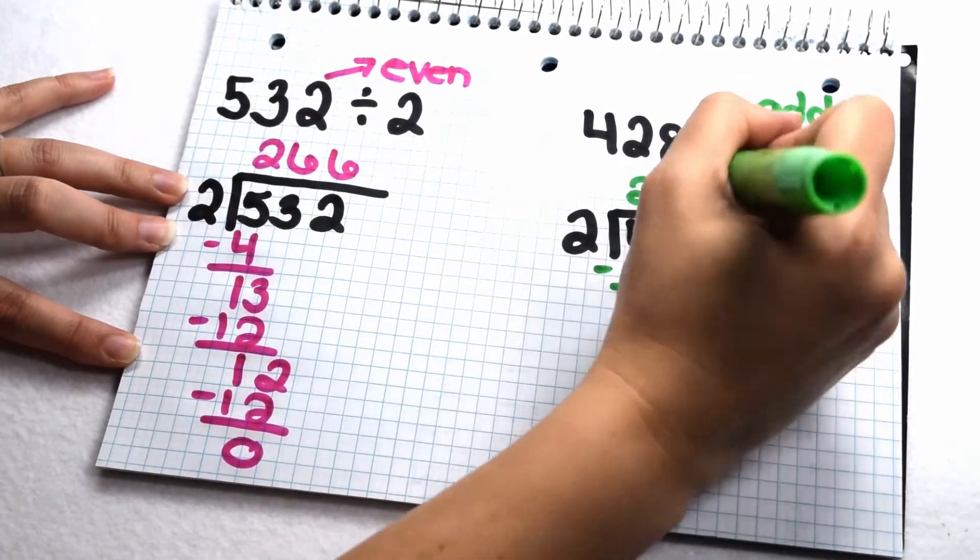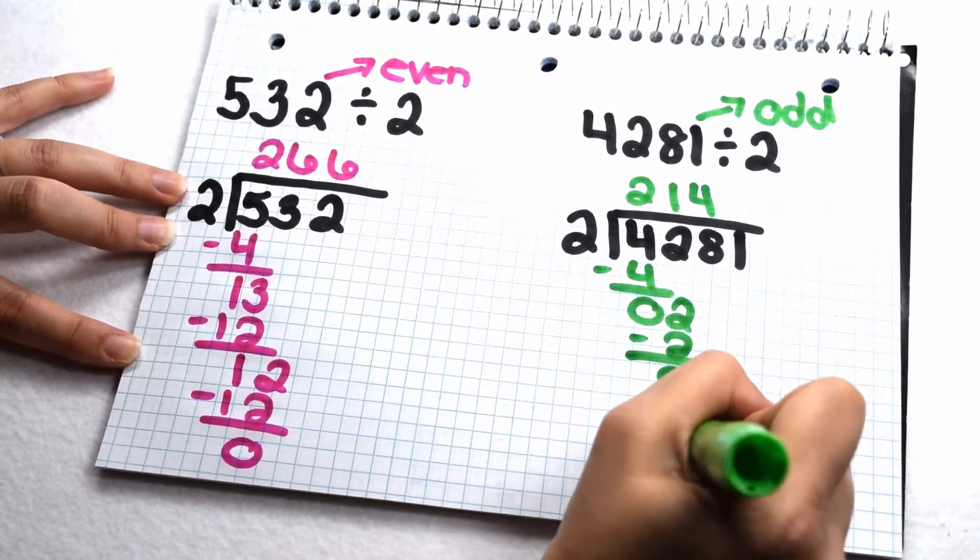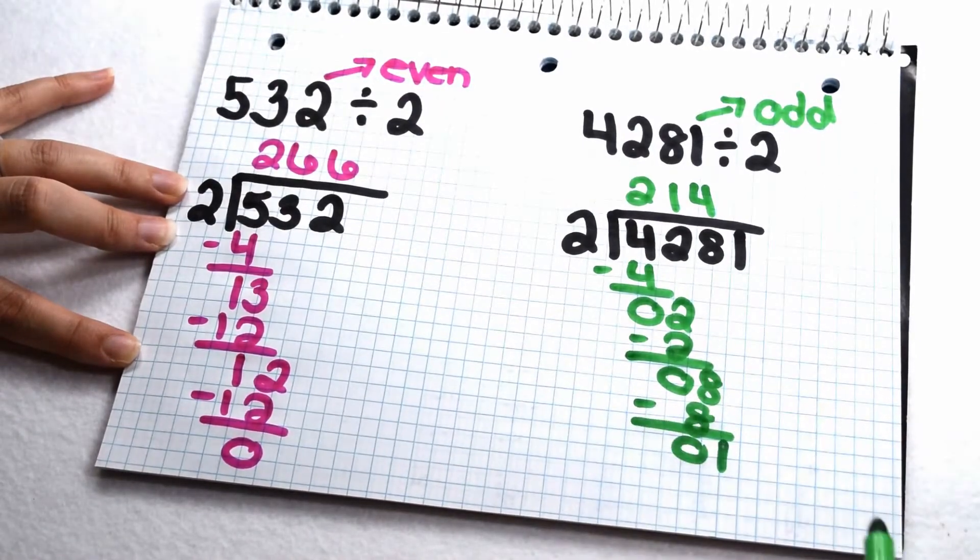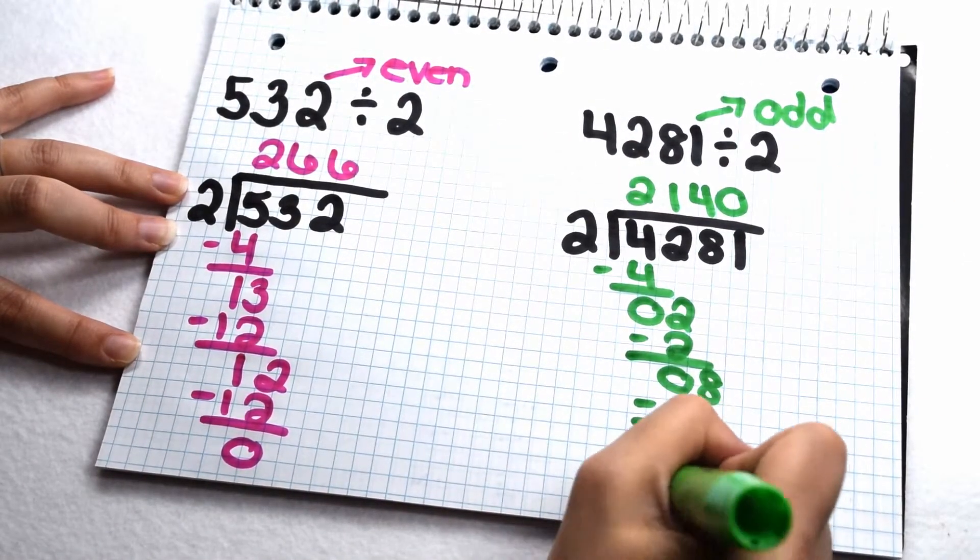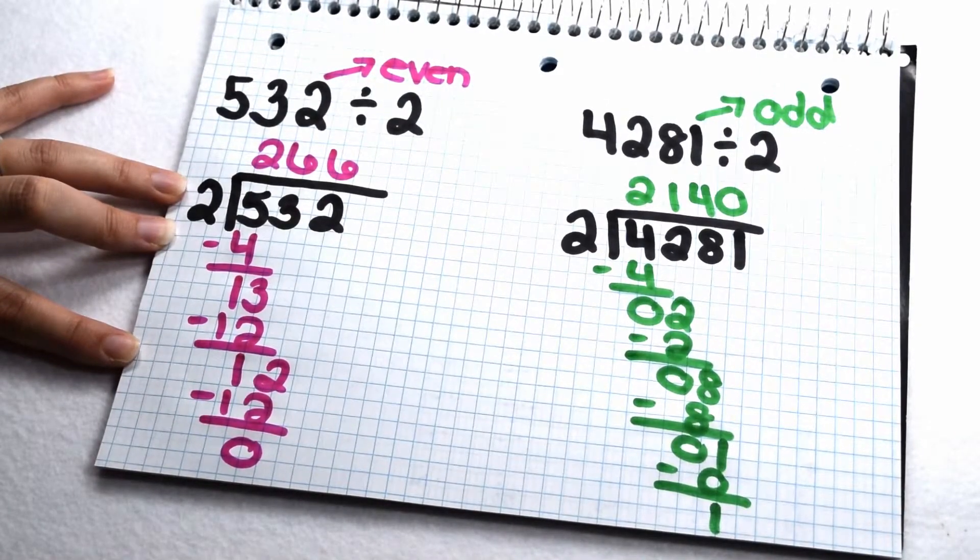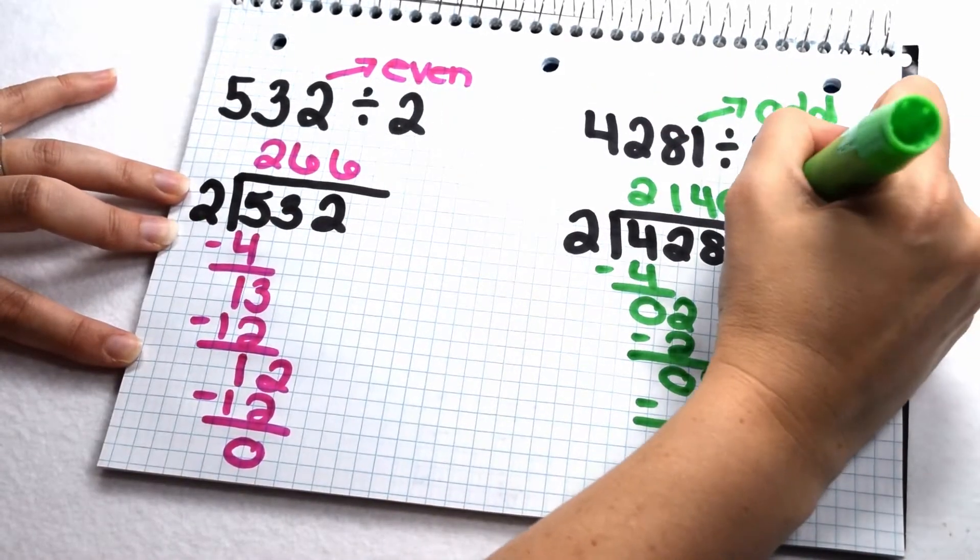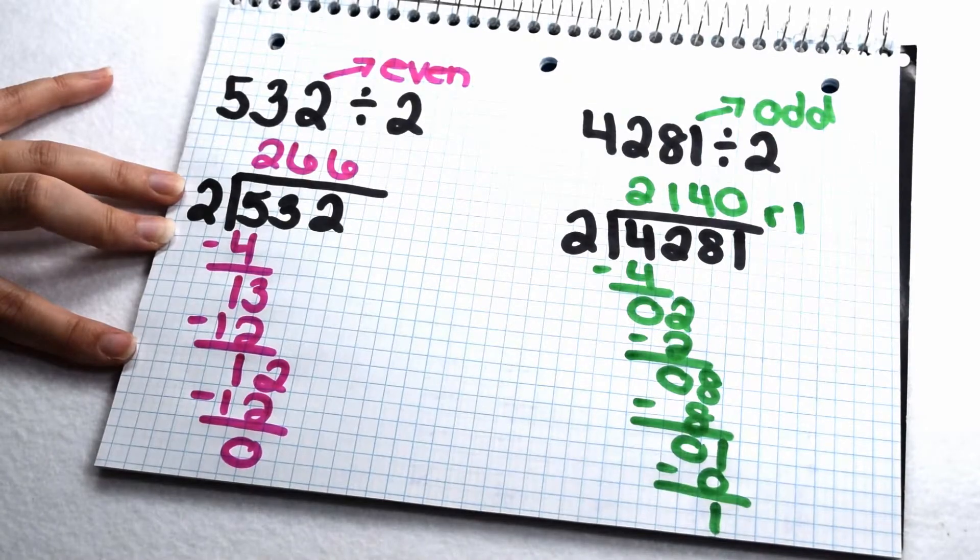Bring down my 1. 2 doesn't go into 1, so I need to put a 0 up here in my quotient, subtract out my 0, and I'm still left with 1. So that means we're going to have 2,140 with the remainder of 1 as our quotient.